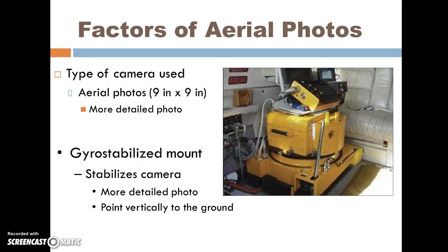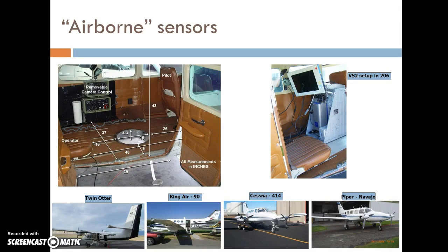Let's focus a little more on airborne sensors. Aerial photo pairs, commonly 9 by 9 inches, allow for stereographic viewing. These are typically mounted on a camera mount that has some kind of gyroscope, which allows it to stabilize the camera and maintain that vertical perspective. A few views of different types of aircraft are used for this purpose.